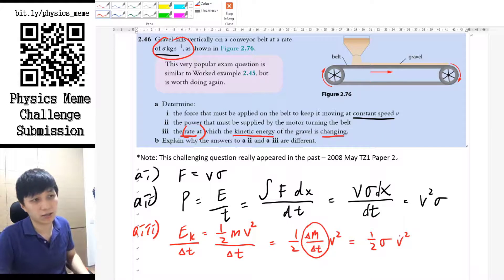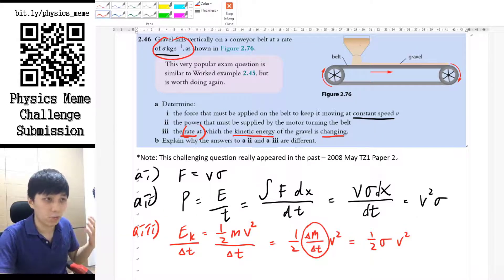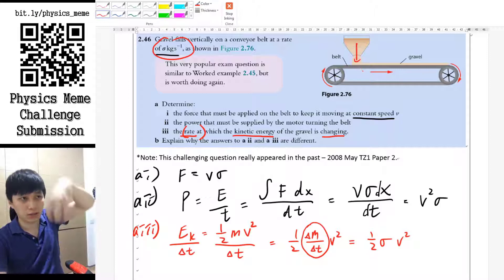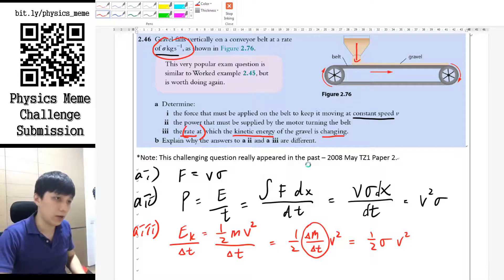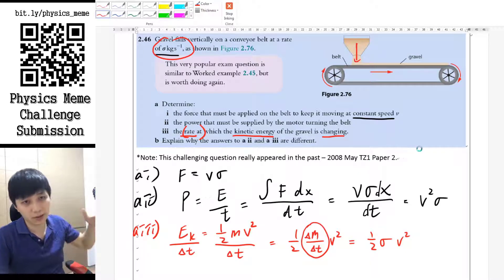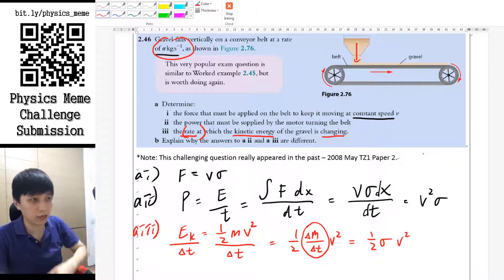So this is the rate of kinetic energy that this gravel is gaining, because when it's dropped here, there was no energy. Imagine like you just pour the sand, the gravel, vertically onto the conveyor belt, it would just get stopped. And afterwards what happened is the conveyor belt starts to move and it helps those sand to gain the KE.